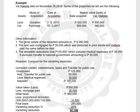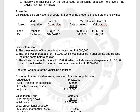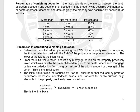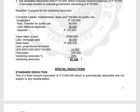Then determine the vanishing deduction percentage. Comparing the date acquired (July 3, 2014) to the date of death (November 2018), that's more than 4 years but less than 5 years — so the applicable rate is 20%. Final basis times 20% gives the vanishing deduction. The final basis (initial basis P300,000 less pro-rated deduction P14,500) times 20% = vanishing deduction of P57,100.